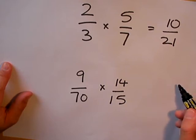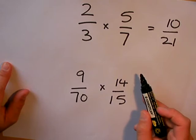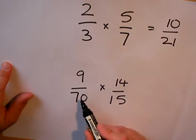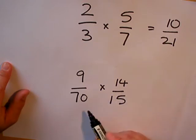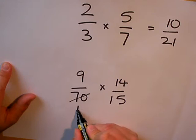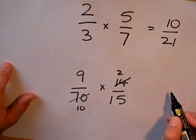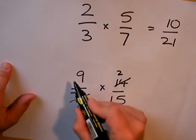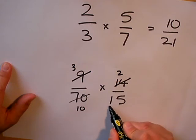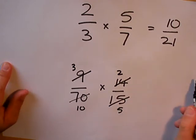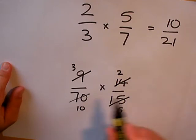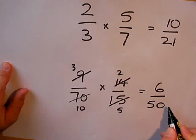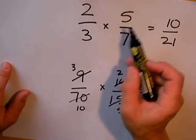Rather than canceling at the end, we'll see if we can cancel at the start. Are there any numbers at the top and any numbers at the bottom that will cancel? You can see that 7s go into 14 and 7s go into 70, so we can actually cancel, that is divide top and bottom by 7. 7s into 70 go 10 and 7s into 14 go 2. What about 9 and 15? Will they cancel? Well, 3s go into 9 and 3s go into 15, so we can cancel by 3. 3s into 9 go 3 and 3s into 15 go 5. That leaves me with lots of easier numbers to multiply together. Multiply the top numbers, 3 by 2 is 6, and 10 times 5 is 50.